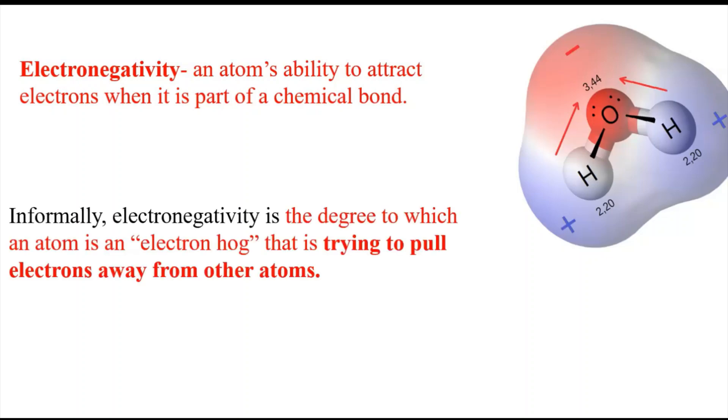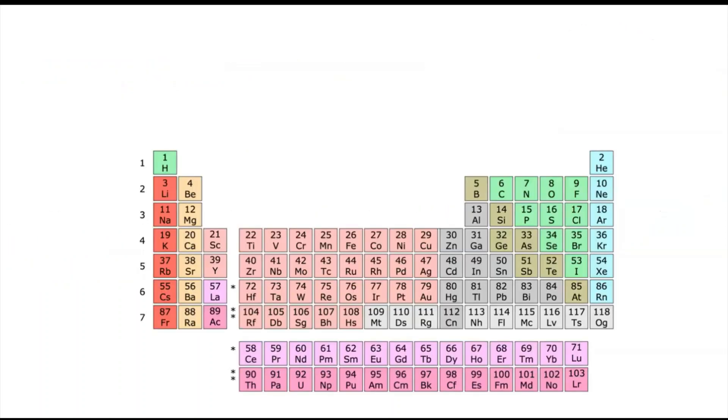A more informal way that I usually use when introducing it to students sometimes is the degree to which an atom is an electron hog. That is, it's trying to pull electrons away from other atoms. And you can see on the diagram here, the oxygen atom in the water molecule is trying to pull electrons away from the hydrogen because it's more electronegative.